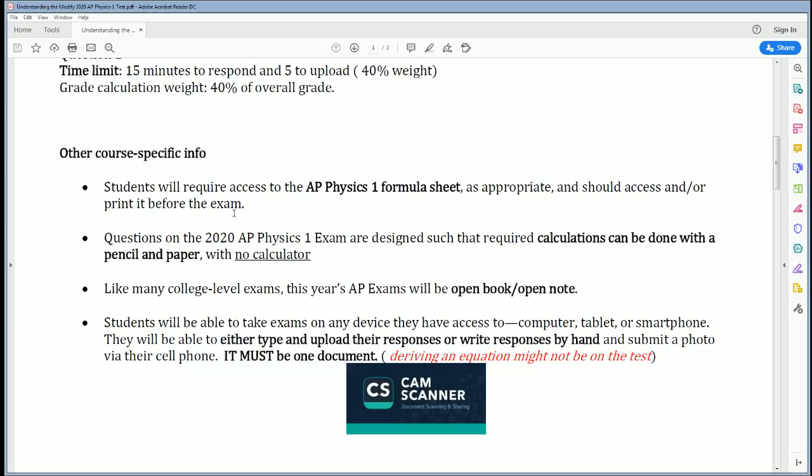Here is some specific information. You need your formula sheet printed out prior to the test. You can use a calculator, but you're not going to be using it a lot. Calculations can be done by hand. G can be used as 10. Like college exams, this would be open notebook and open note, but don't assume you're going to be running through all your notes during this time. You have a limited amount of time.